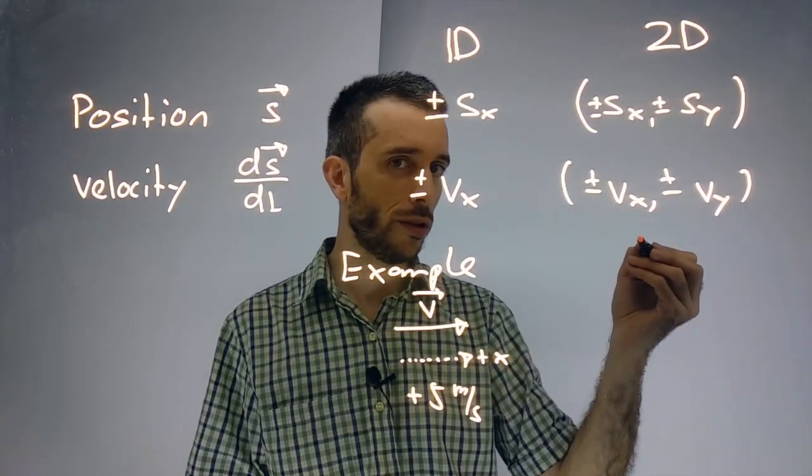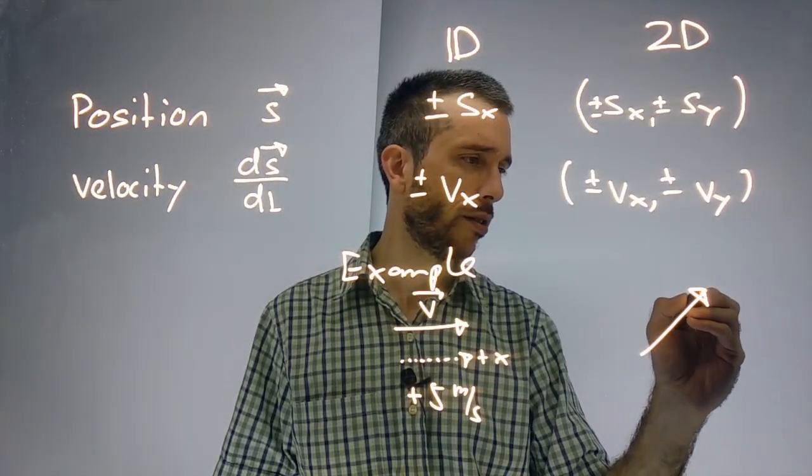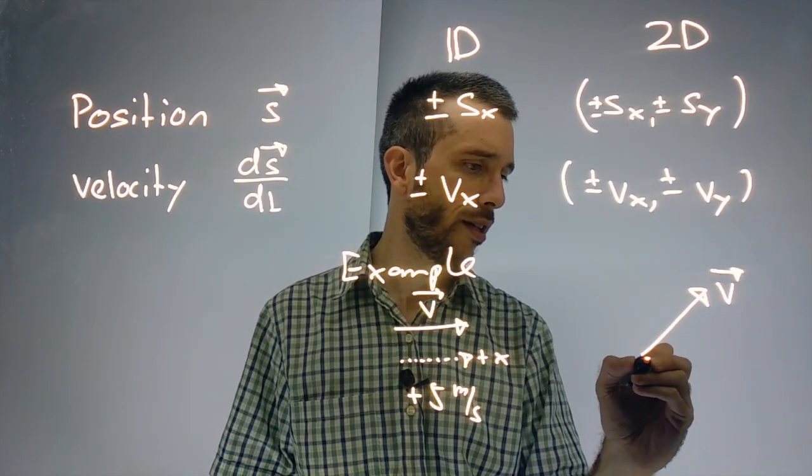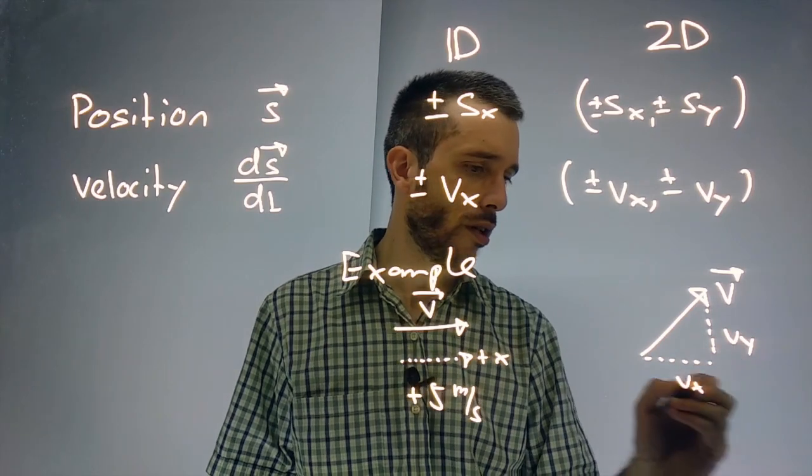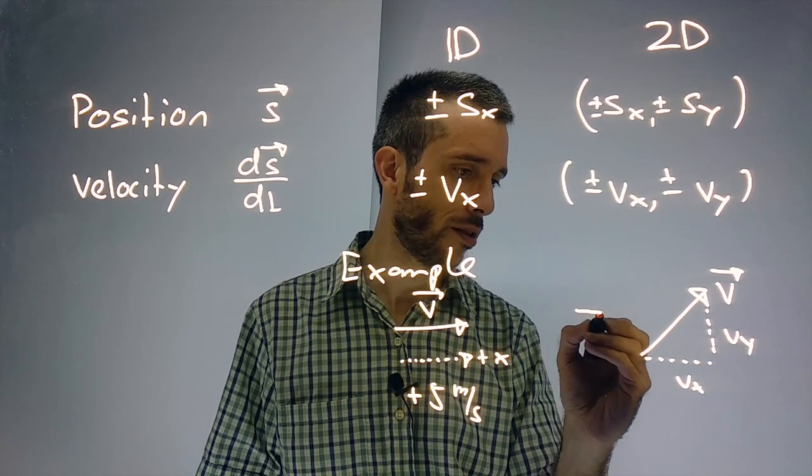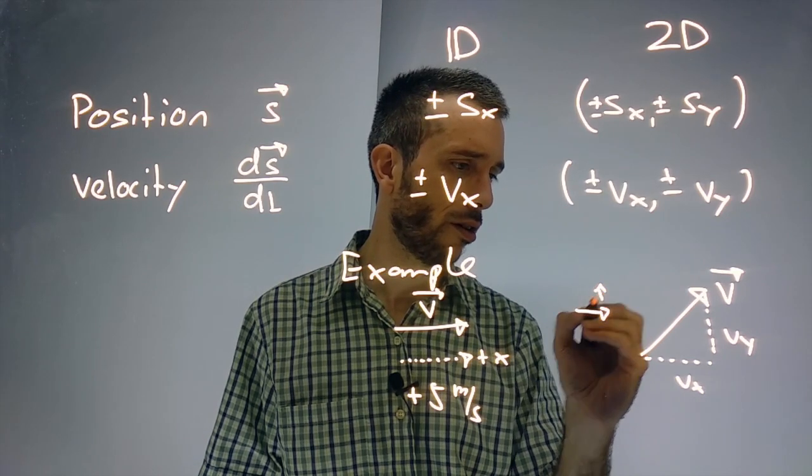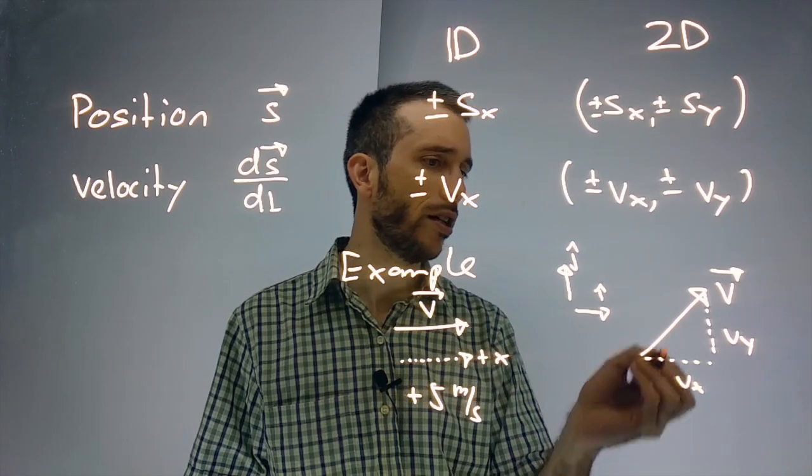Now in 2D, we could have a velocity that has an x component and a y component. We say that to the right is the vector i hat, and to the top is the vector j hat. I hat in x, j hat in y.